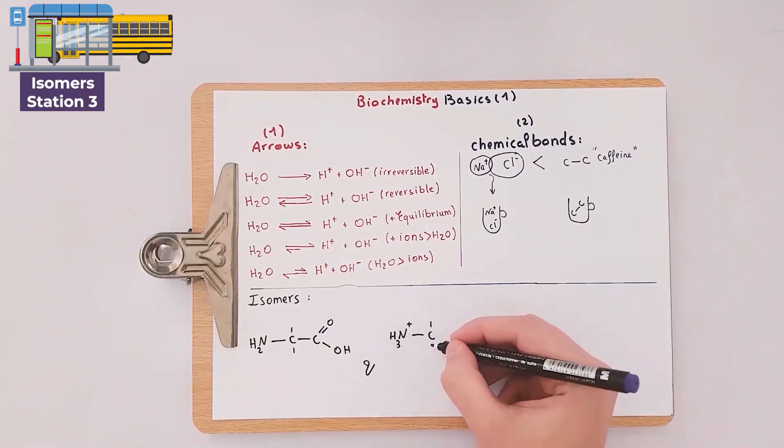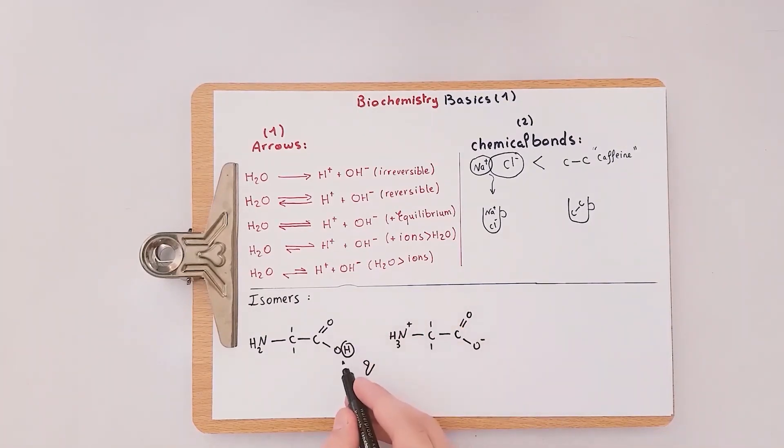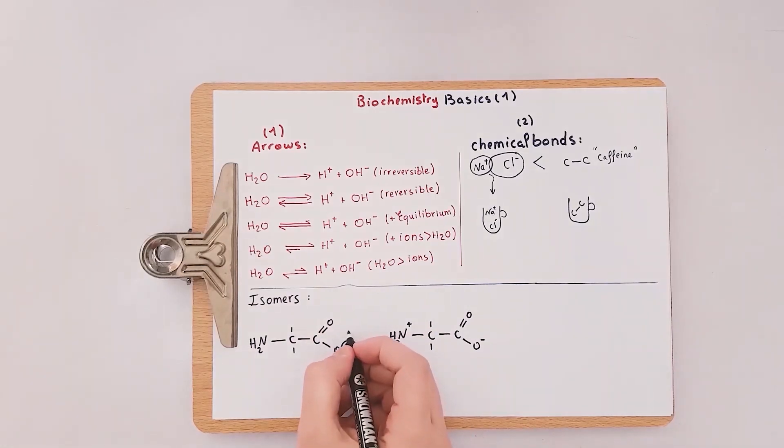The third crucial thing that we have is the isomers. Those two compounds have the same molecular and geometrical structure but only differ in proton binding locations. Instead of bonding with oxygen, it made a coordinate bond with nitrogen. Those two compounds are called isomers.